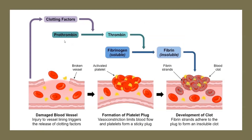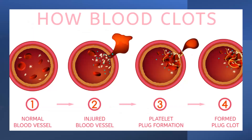Vasoconstriction limits blood flow, and platelets form a sticky plug on the surface. Fibrin then forms a three-dimensional network — strands adhering to the plug to form an insoluble clot. That is the real phenomenon of clotting at a blood vessel injury site. Normal blood vessel → injury → platelet plug formation → covered with an insoluble clot.